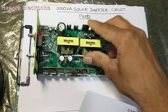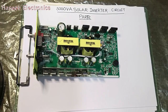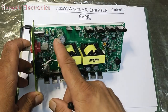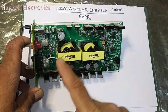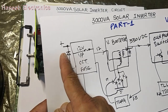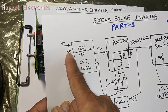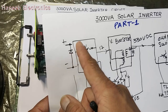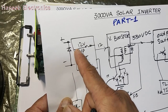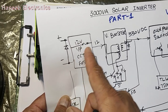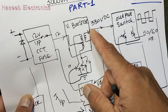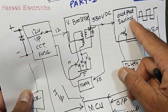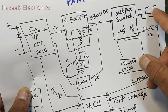In this video we will discuss the high power rail. There are two sections: the first section is the high power, high current section where 12 volts and high amperage will go to the booster section. The booster section will boost the voltage, and the output switch will provide the output.